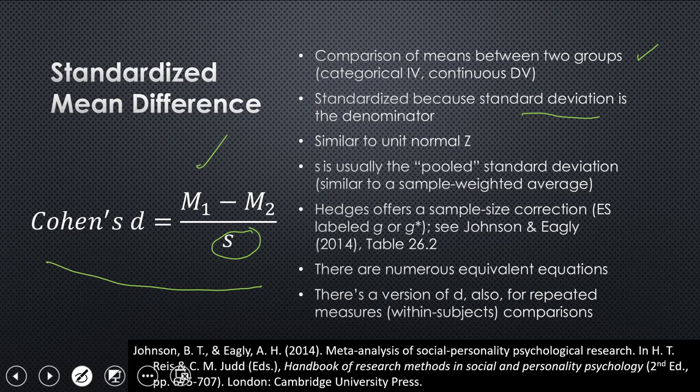But usually we use the pooled standard deviation in here, the SP. Cohen didn't actually specify that. But in conventional use, that's what's happening. Some pooled standard deviation is basically like a sample weighted average across whatever you're pooling. You can pool more than two of them if you've got multiple groups.